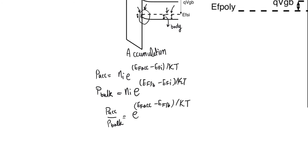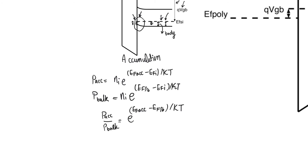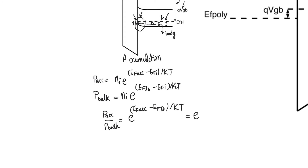The difference between the Fermi level in accumulation and the Fermi level in flat band is equal to the amount of bending added to the system relative to the flat band condition, which equals the surface potential of the silicon. So this gives us e^(q·V_surface / kT). Since P_bulk equals Na — the doping level in the substrate — we reach the conclusion that P_acc = Na·e^(q·V_surface / kT). This expression is actually true for the hole concentration near the surface regardless of the mode of the MOS capacitor: equilibrium, flat band, accumulation, or any other mode.